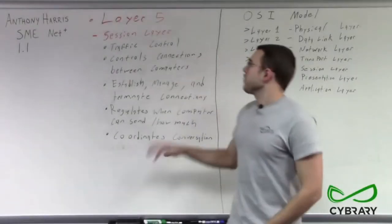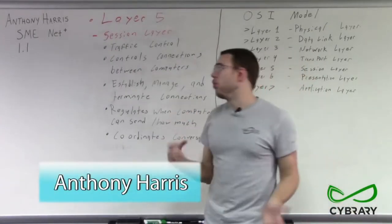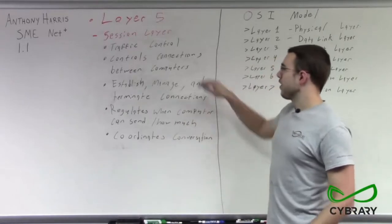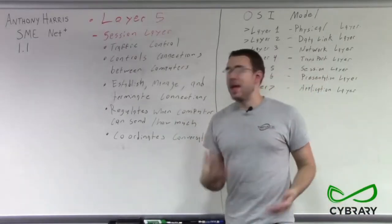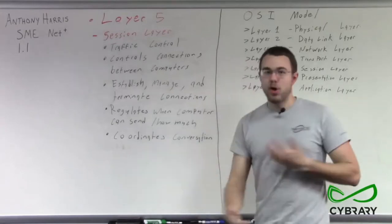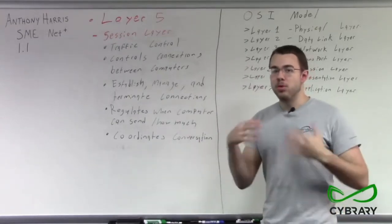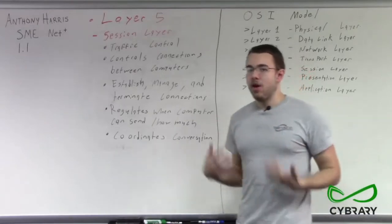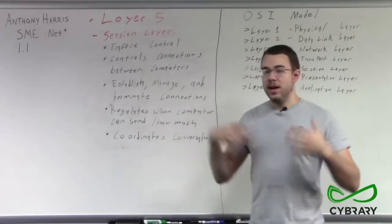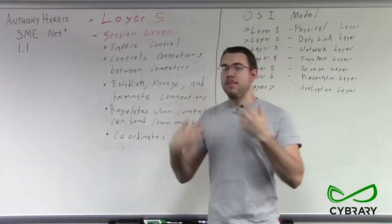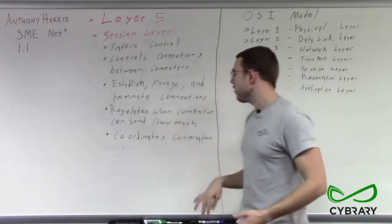Next we have our Layer 5, the session layer, which is our traffic control layer. Layer 5 controls the connections between our computers — it's the layer that establishes, manages, and terminates connections. It's the layer that says you're allowed to talk now, creates the connection, and manages who can send when, who can send what, and what type of protocol we're going to use.